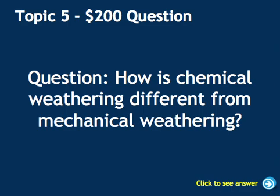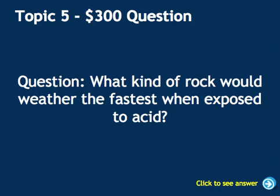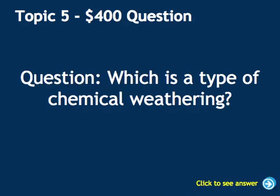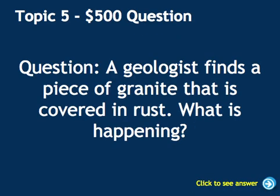How is chemical weathering different from mechanical weathering? In chemical weathering, new substances are formed, whereas in mechanical weathering, material just gets broken up into pieces. What kind of rock would weather the fastest when exposed to acid? Out of the given choices, the answer is limestone — we'll do chemical tests next semester to show that further. Which is a type of chemical weathering? Hydration is the type of chemical weathering to look for — when something gets hydrated with water. A geologist finds a piece of granite covered in rust. What's happening to it? It is becoming oxidized.